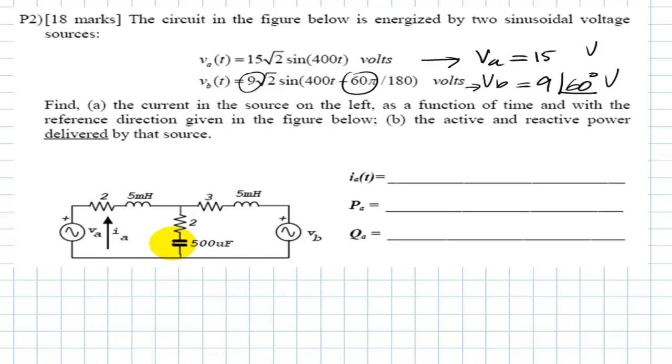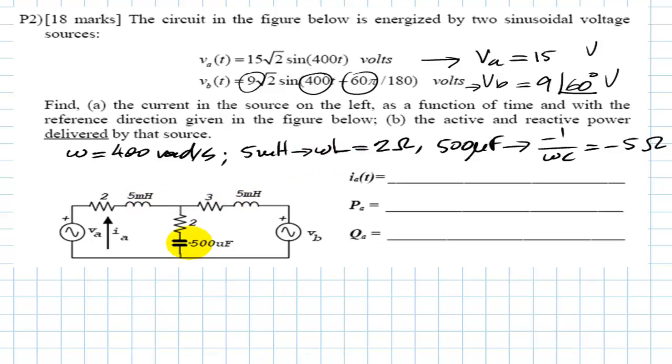The passive elements will be represented by impedances. The frequency omega is given by the sources as 400 radians per second. With that frequency, the inductors of 5 mH have impedances with reactance omega L, which is 400 times 5 mH, that is 2 ohms. The 500 µF capacitor impedance has reactance negative 1 over omega C, that is negative 5 ohms.